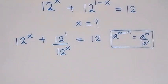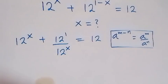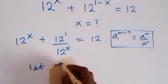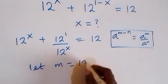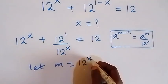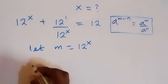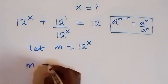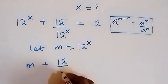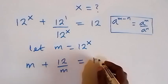In the next step, let's represent 12 raised to power x with a letter. Let m equal 12 raised to power x. Then this equation will become m plus 12 — that's 12 raised to power 1 — over m, which equals 12.